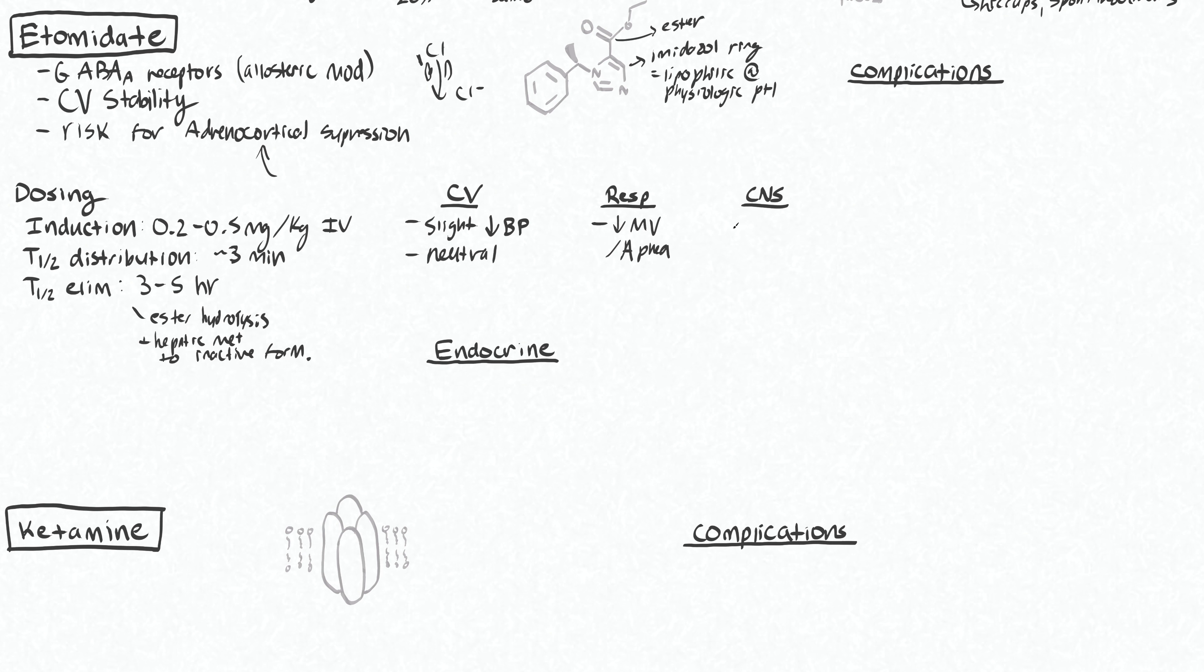In the central nervous system, just like propofol, it is a CNS depressant because it works on the same receptors. Unfortunately, it seems to cause nausea instead of preventing nausea. So that is perhaps a subtle but important difference between etomidate and propofol for everyday use.